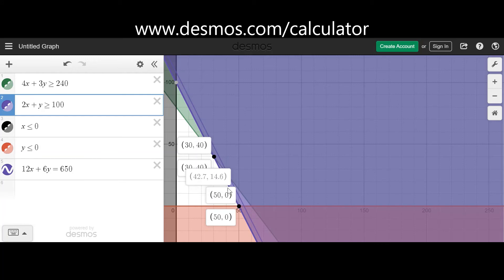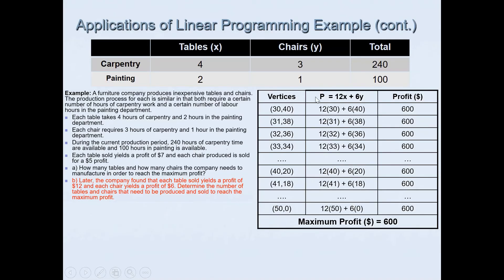Fill in a table using the integer-valued vertices identified from Desmos. Pause the video and try filling in the table yourself, then check your answer. Every combination gives a maximum profit of six hundred dollars. For example, 30 tables and 40 chairs: 12×30 + 6×40 = 600. Likewise, 31 tables and 38 chairs also gives 600. We always pick integer values because we cannot have a decimal number of tables and chairs manufactured and sold.